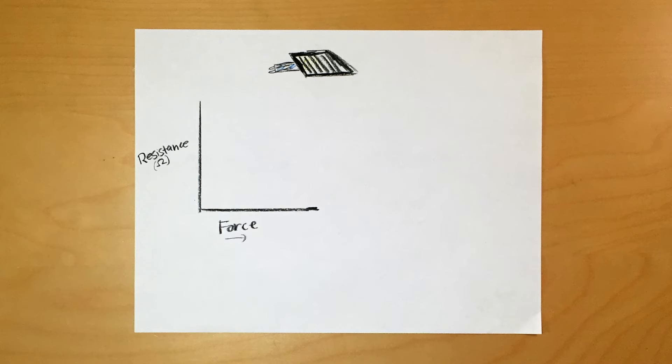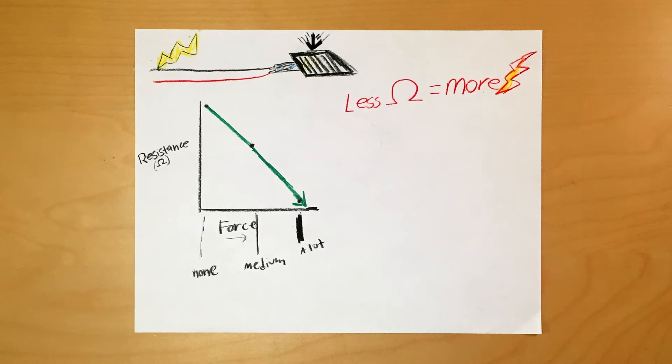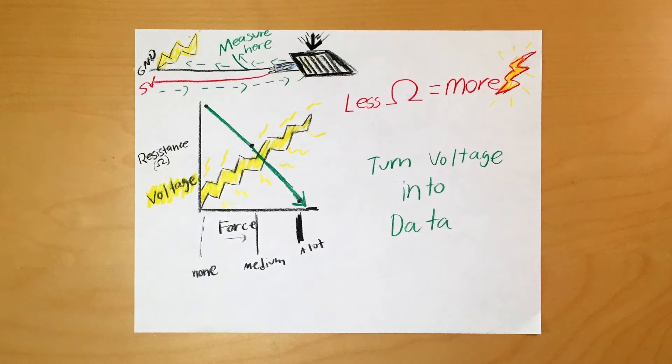Force sensors decrease in resistance as more force is applied. That means that in a circuit, the voltage will increase with force. We can measure the circuit's voltage and turn that into data, effectively gauging the amount of force applied.